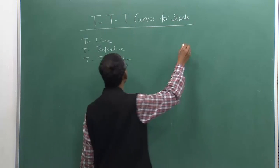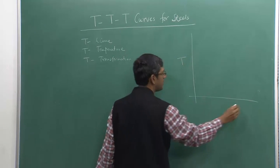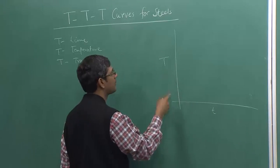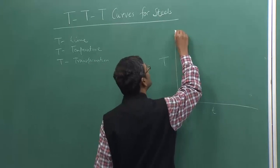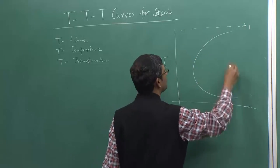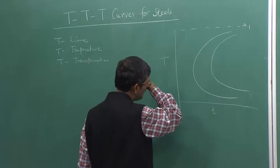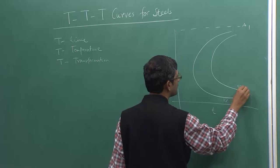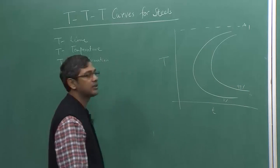The way we plot — basically it should be a 3-dimensional plot but we do not do that in material science or metallurgy. We plot a 2-dimensional plot between time and temperature. This is the A1 temperature, and then I plot inverted C curves. This is 1% transformation, this is 99% transformation — just like that. This is what the chart looks like.